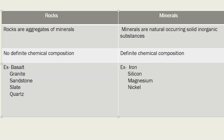So how can you differentiate rocks from minerals? It's not that hard. Rocks are aggregates of minerals. Minerals are naturally occurring solid and organic substances. Rocks have no definite chemical composition, while minerals have a definite chemical composition. Some examples of rocks are basalt, granite, sandstone, slate, and quartz. Some examples of minerals are iron, silicon, magnesium, and nickel.